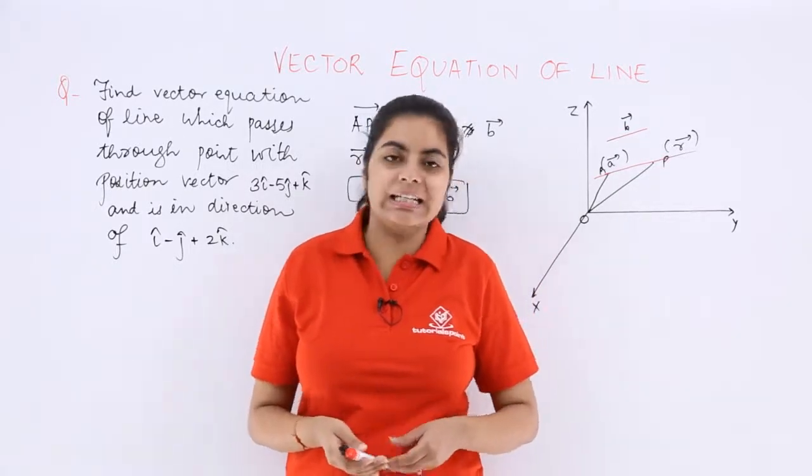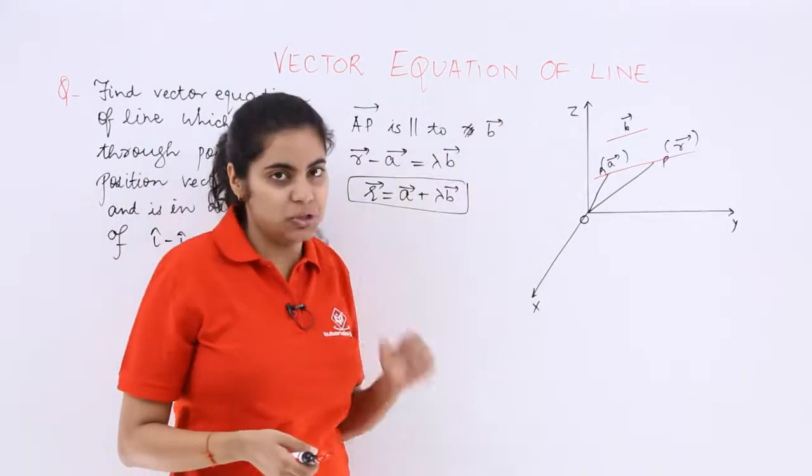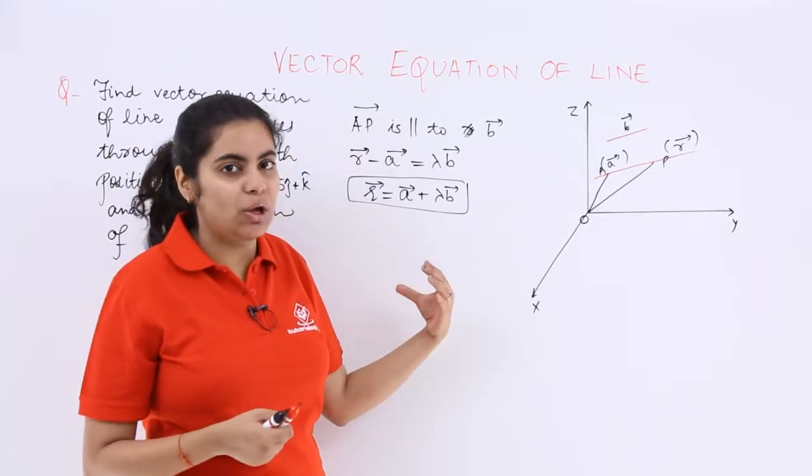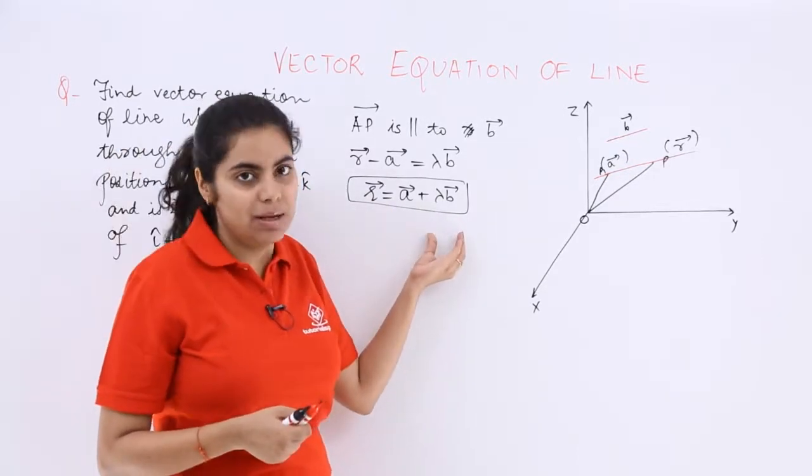In the previous video, we had studied the basics about the vector equation of a line, wherein we found out the vector equation of a line is r equals a plus lambda b.